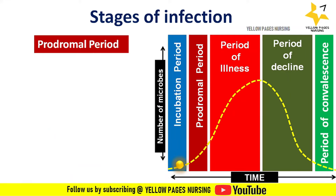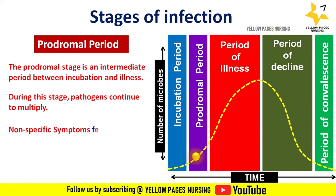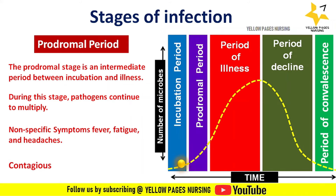Next, the prodromal period. The prodromal stage is an intermediate period between the incubation and illness. During this stage, pathogens continue to multiply. Symptoms become first apparent, and these symptoms are typically non-specific to the pathogen — they may include fever, fatigue, and headaches. The prodromal stage tends to be shorter than the incubation period, and a person is contagious and can transmit an infection to others during this phase.